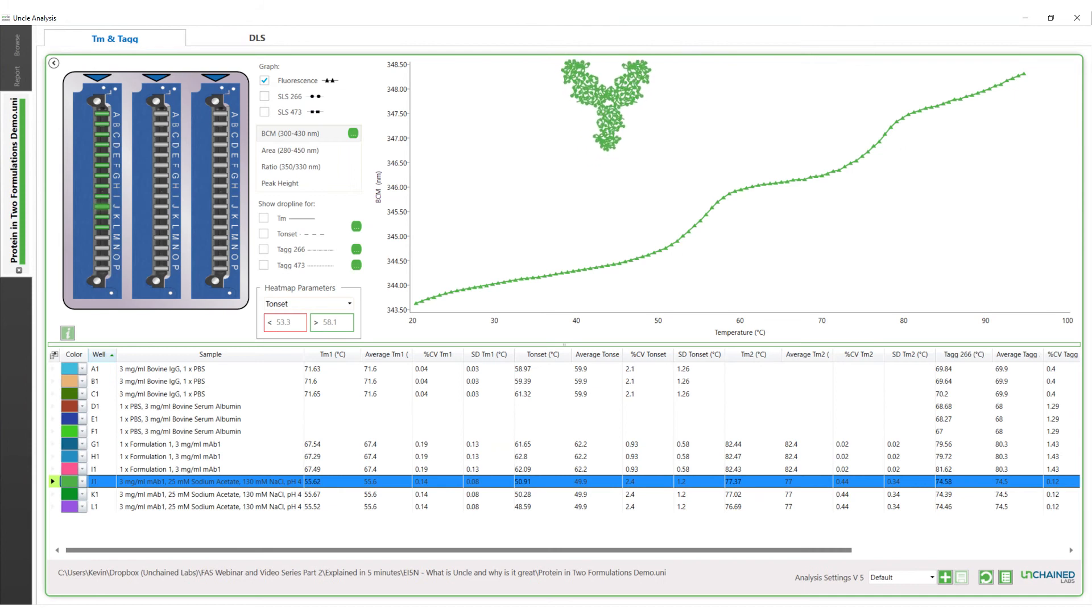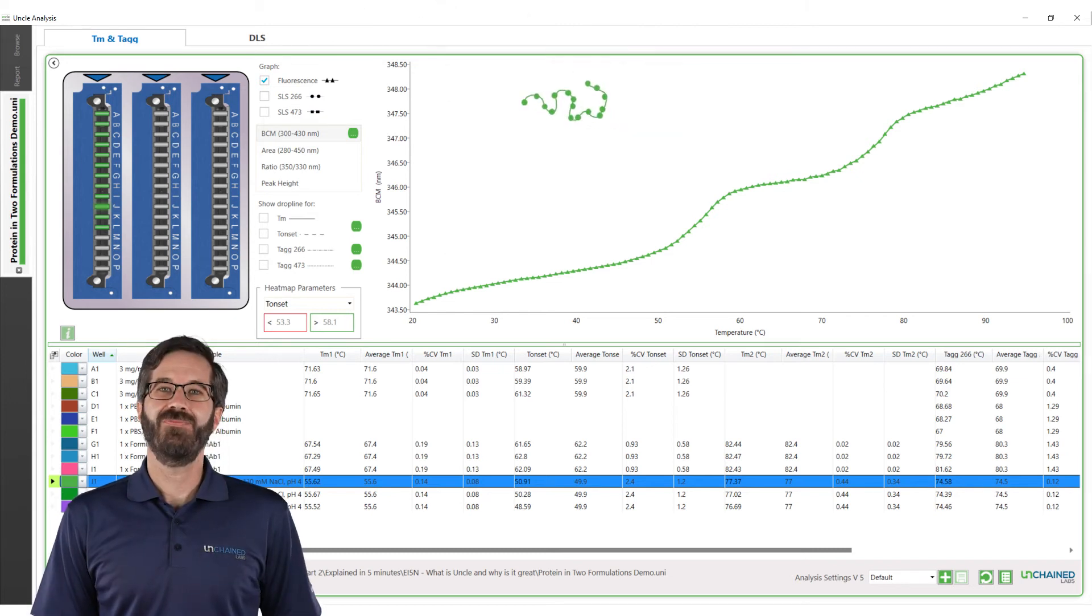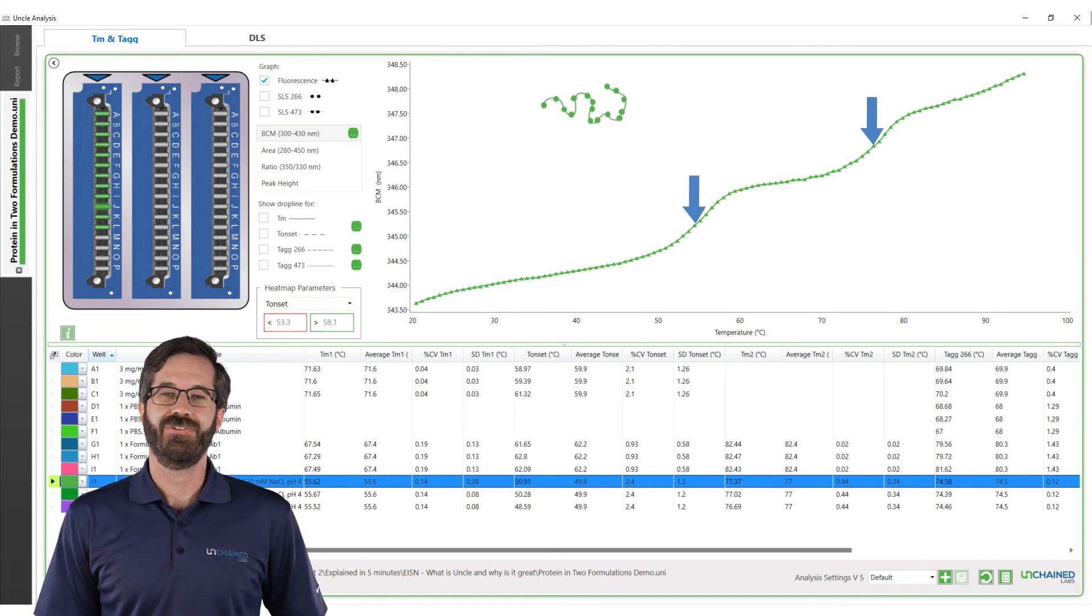UNCLE's BCM analysis of that data over thermal ramp finds out when proteins unfold. These events show up as inflection points identified on our BCM versus temperature graph, where we've marked with blue arrows. Those are melting temperatures, or TMs.